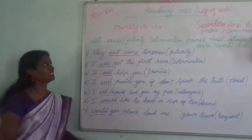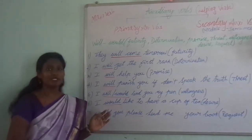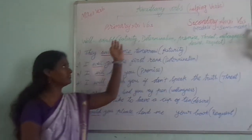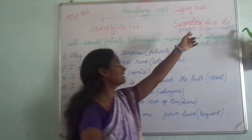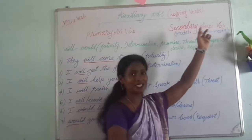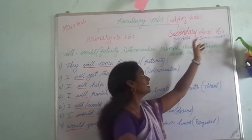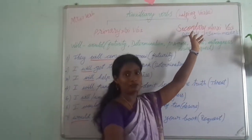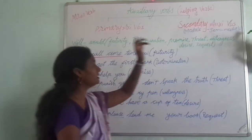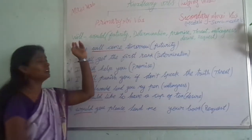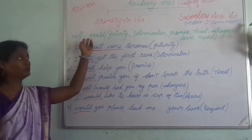Hello friends, we are seeing the auxiliary works. In that auxiliary works we have two: primary and secondary. In secondary we have modals and semi-modals. We are seeing modals, and in modals we are seeing will and would.